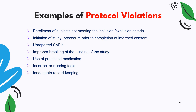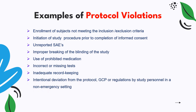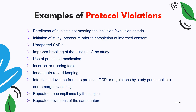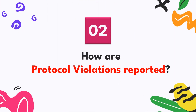Inadequate record keeping is also a protocol violation. If study personnel intentionally deviate from the protocol, GCP, or regulatory requirements in a non-emergency situation — emergency situations being understandable — that is considered a protocol violation. Additionally, if a protocol deviation is repeatedly carried out by the subject or the same type of deviation is repeated multiple times, that repeated deviation converts to a protocol violation.